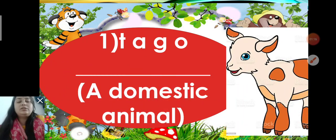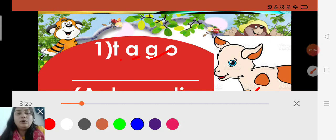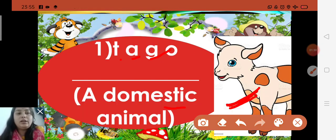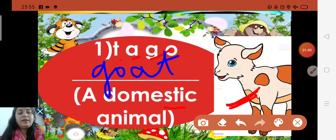First, children, first you just understand the clues. There is written a domestic animal and second, you just identify the pictures. This is, as you all know, what is this? First, domestic animal, this is the picture of goat. There is letter T-A-G-O. So, you will write here G-O-A-T, goat. Goat is a domestic animal. It is very useful animal. It is tamed by humans. It has hooves on its leg and a long beard on its chin. The skin of the goat contains fur.